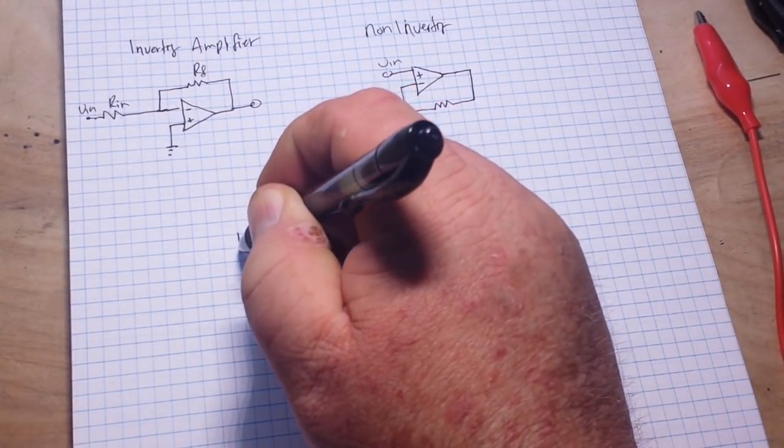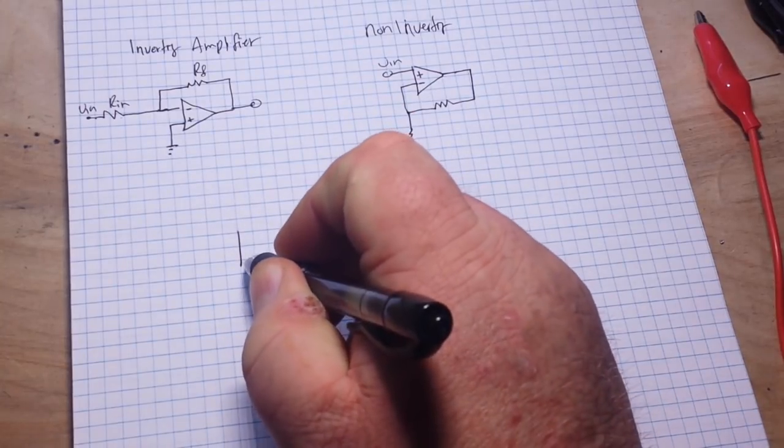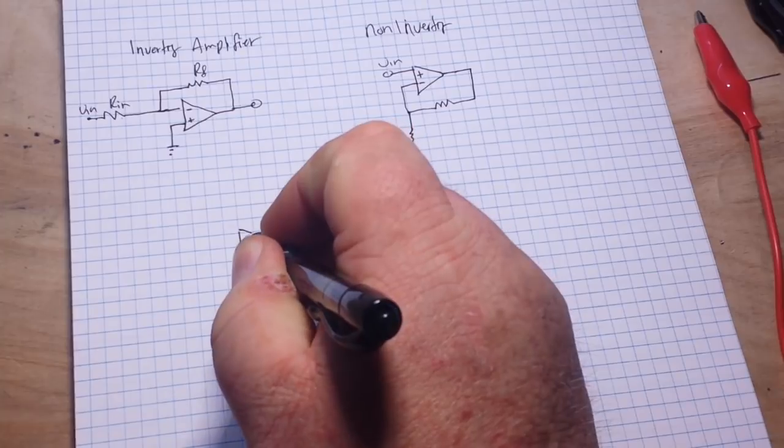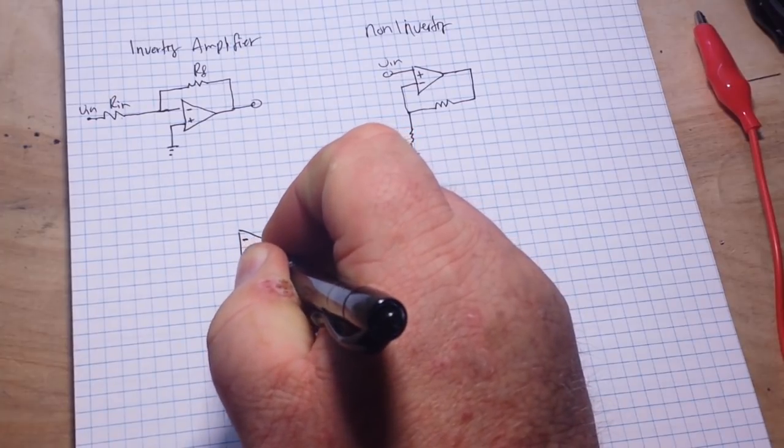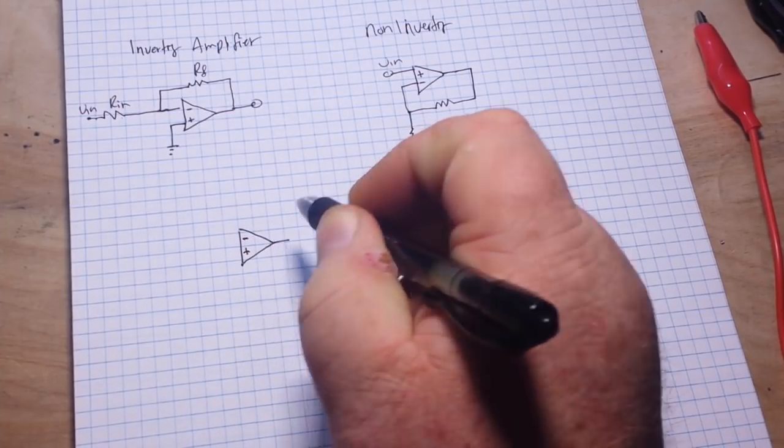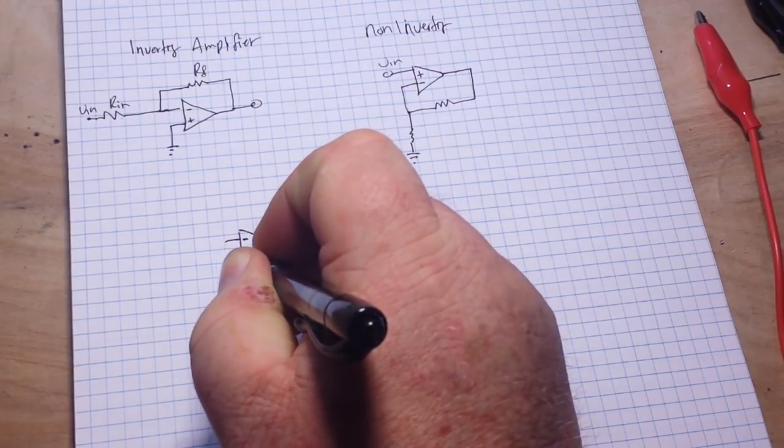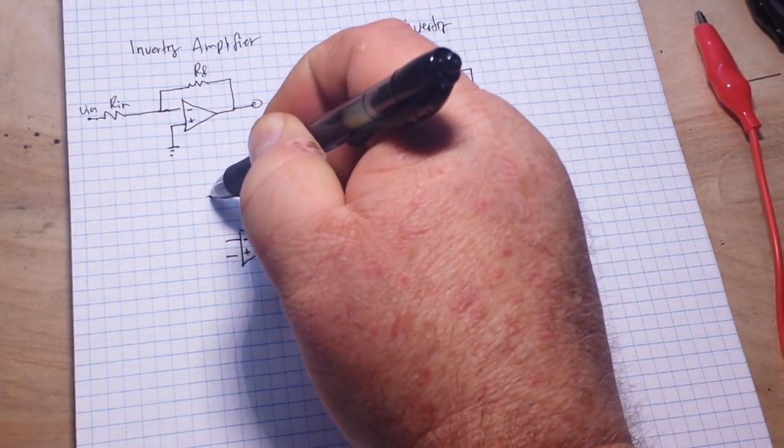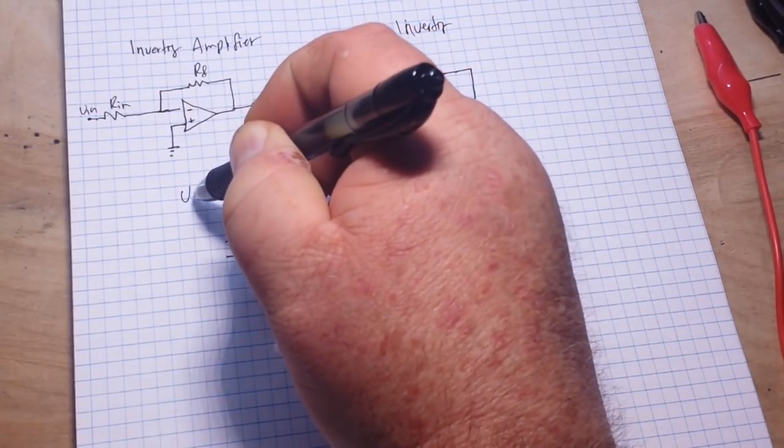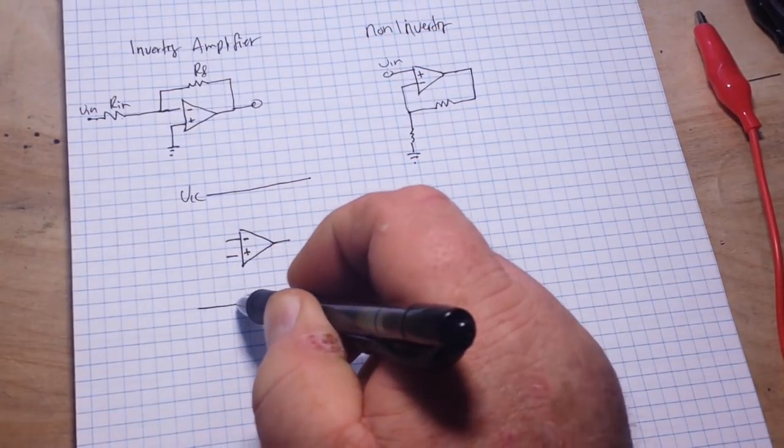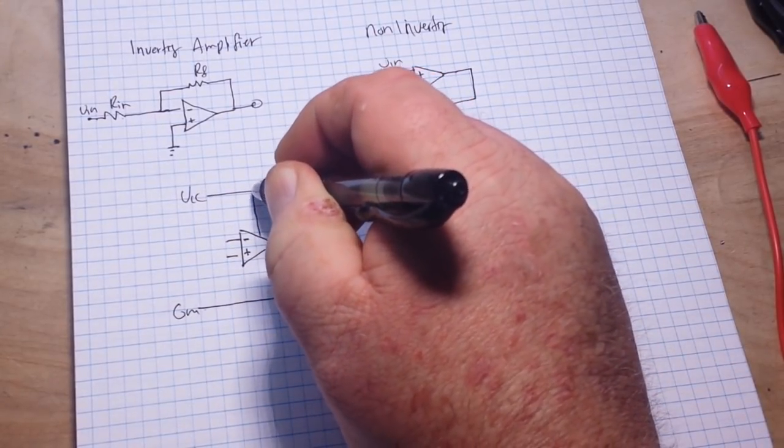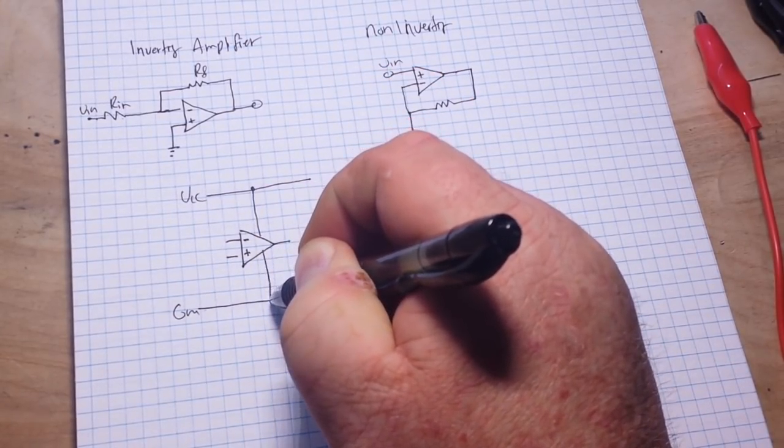So let me just draw another op-amp here for you. We'll put the inverting on top, non-inverting on the bottom, there's our output, there are our two inputs. Now in this case, I'm just going to draw our VCC rail and our ground rail here. You know that all these op-amps do require these connections.